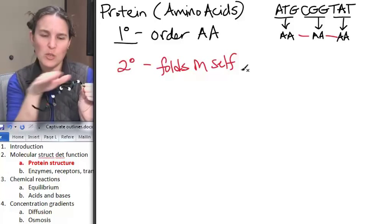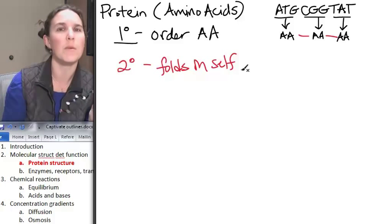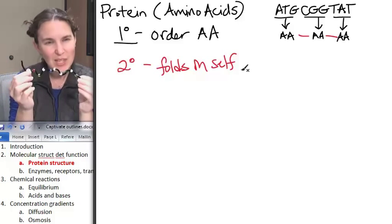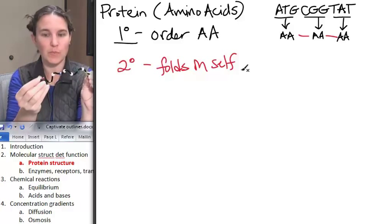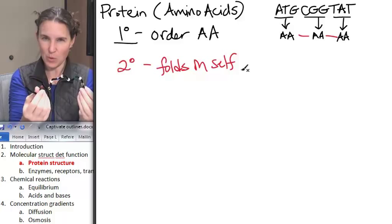There's two, we can form into an alpha helix or we can form into a beta pleated sheet, but it's just a folding of that original primary structure. Does that work for you?